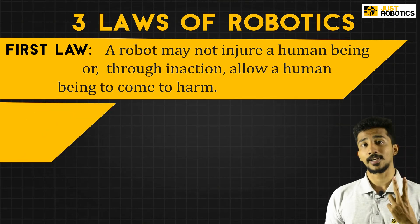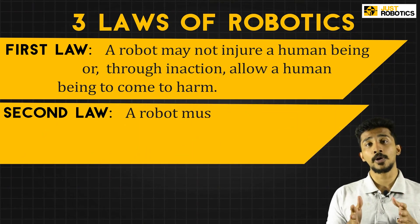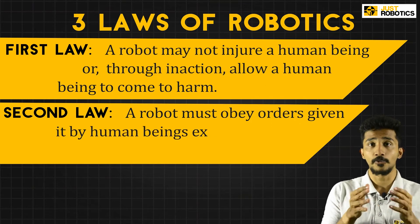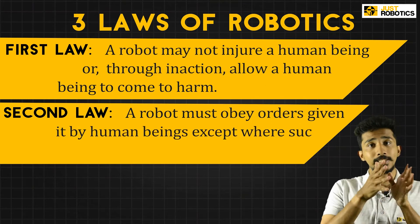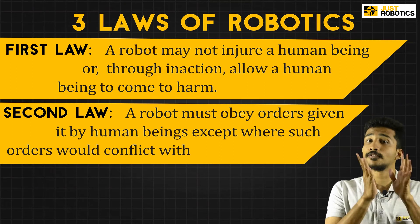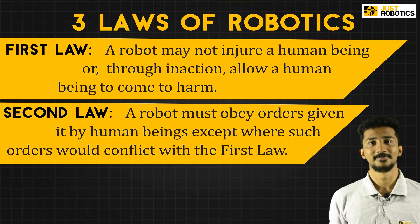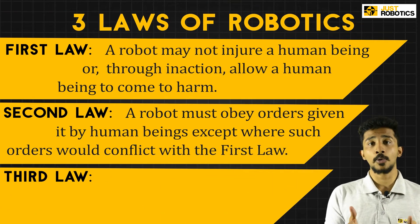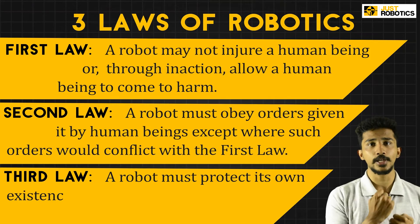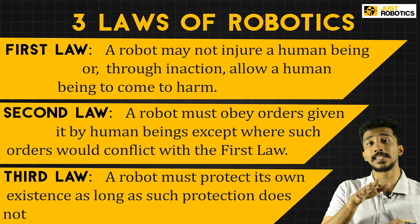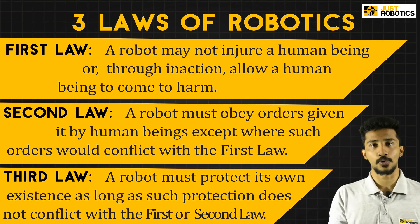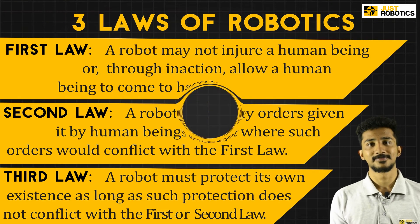The second law of robotics states that a robot must follow the commands given by a human being, provided that this command doesn't conflict with the first law of robotics. The third law of robotics states that a robot must defend its own survival, provided that it doesn't conflict with the first or second law of robotics.